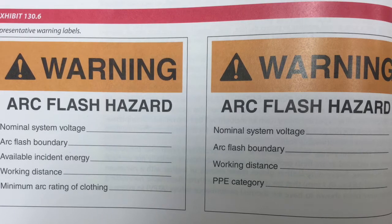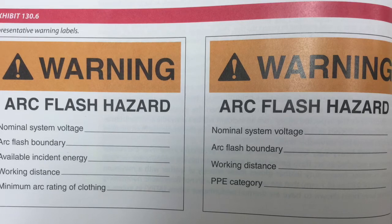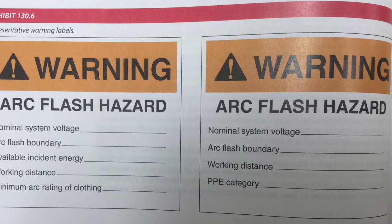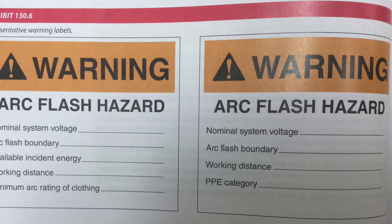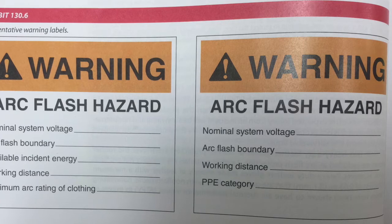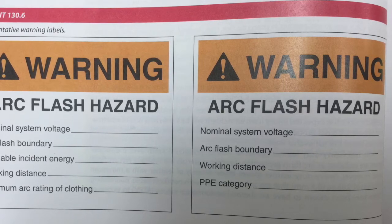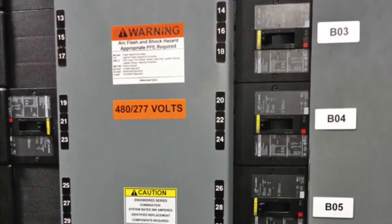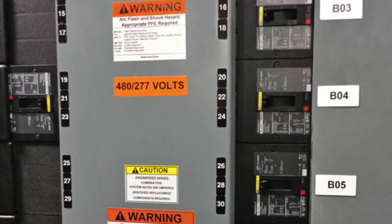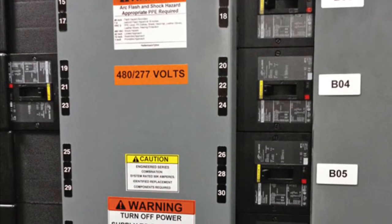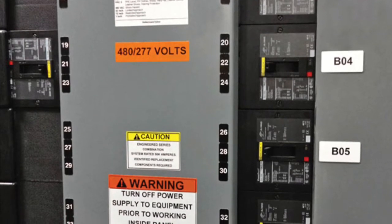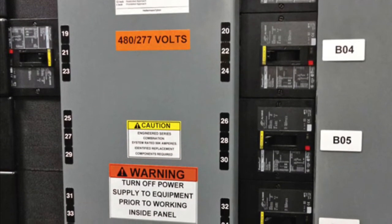Labels should contain nominal system voltage, arc flash boundary, available incident energy, and the corresponding working distance, or the arc flash PPE category for the equipment. An incident energy and a PPE category should not be on the same piece of equipment — only one method of risk assessment may be applied. The method of calculating and the data to support the label shall be documented and reviewed for accuracy at intervals not to exceed 5 years. Where review identifies a change that renders the label inaccurate, the label shall be updated. The owner of the electrical equipment shall be responsible for documentation, installation, and maintenance of the marked label.